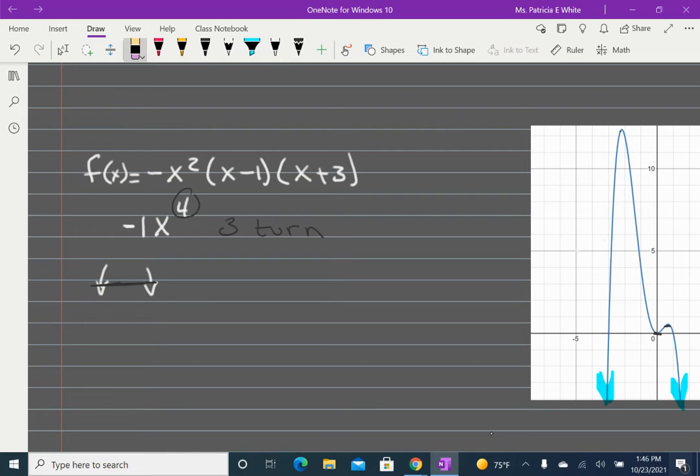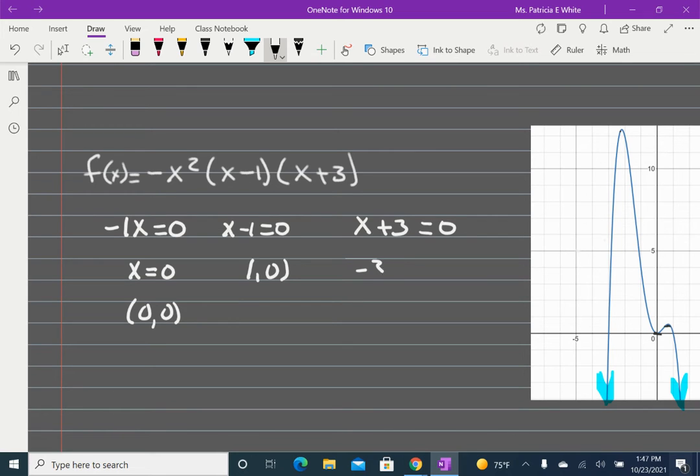I'm going to look for my x and y intercepts. Negative x equals 0 gives me that x equals 0. And that's kind of nice because if my x is 0 when y is 0, then y is 0 when x is 0. So I have (0, 0) for both the x and the y intercepts. x minus 1 equals 0, (1, 0). x plus 3 equals 0, (-3, 0).